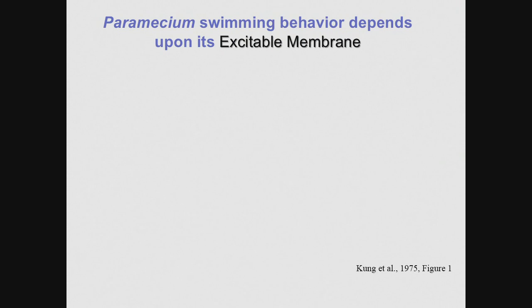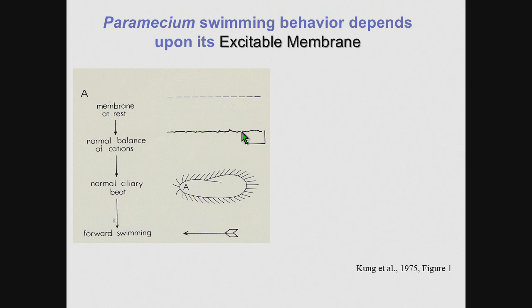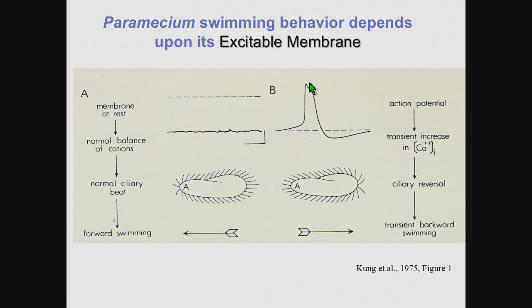Paramecium swimming behavior is dependent upon its excitable membrane. In this panel, you will see a paramecium with its cilia beating toward the posterior, and that drives the cell forward. If you put an electrode into the cell, you'll find that the membrane potential is about minus 40 millivolts. If you hyperpolarize the cell and make this more negative, the cell will beat its cilia faster and move faster. If you depolarize the membrane potential enough above threshold, you will shoot off a calcium action potential. The upstroke of the action potential is the opening of calcium channels in the cilia, and the repolarization is due to opening of potassium channels.